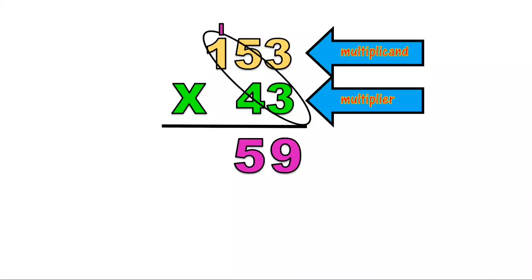1 times 3, plus 1 because of the remainder, equals 4. So the first partial product is 459.